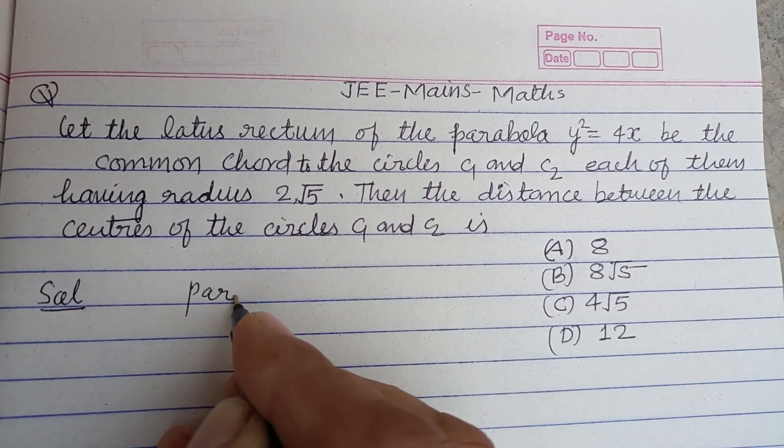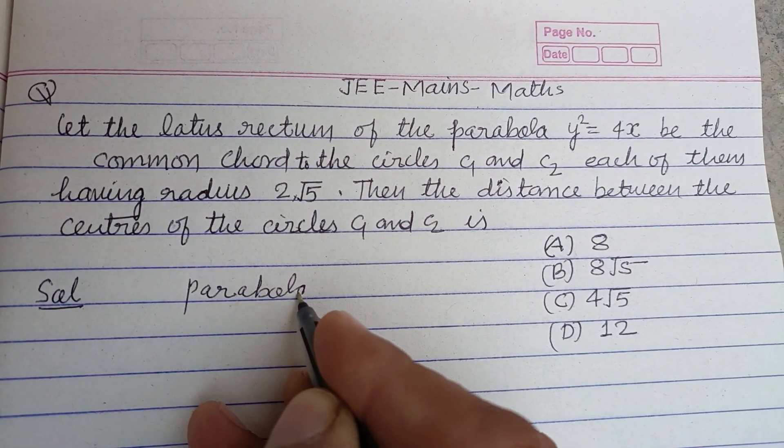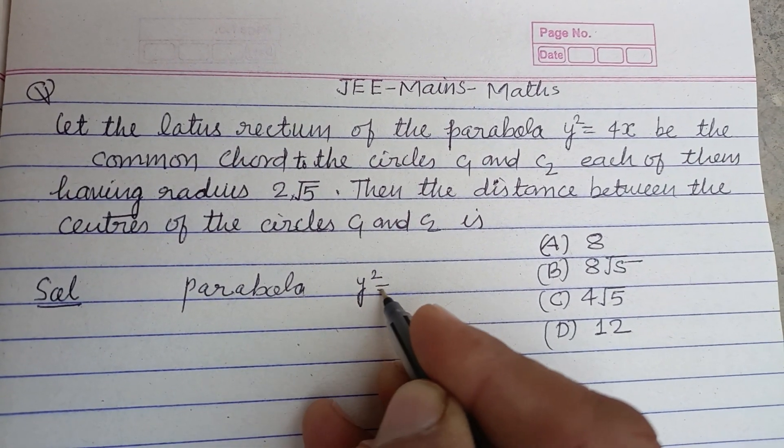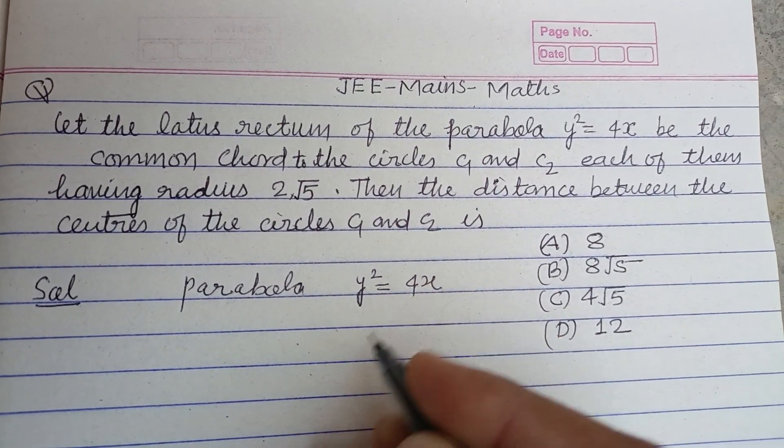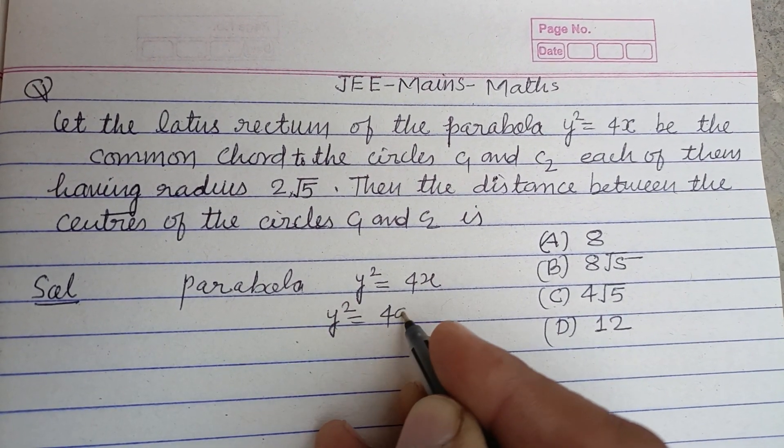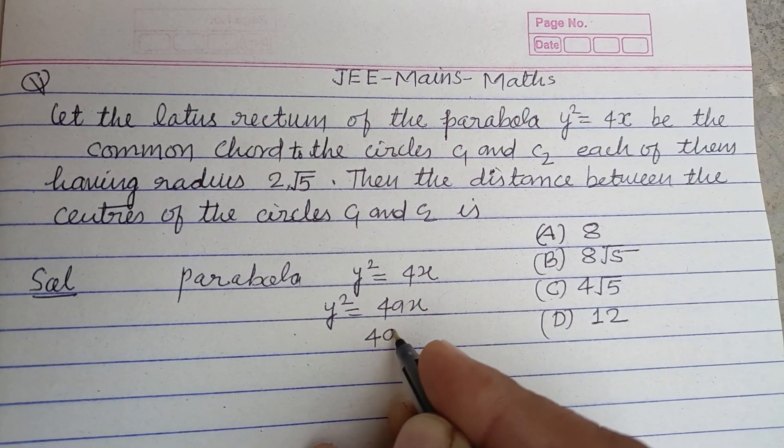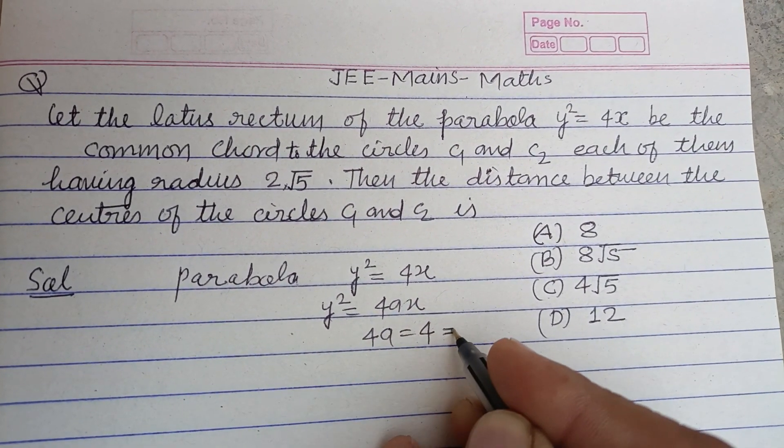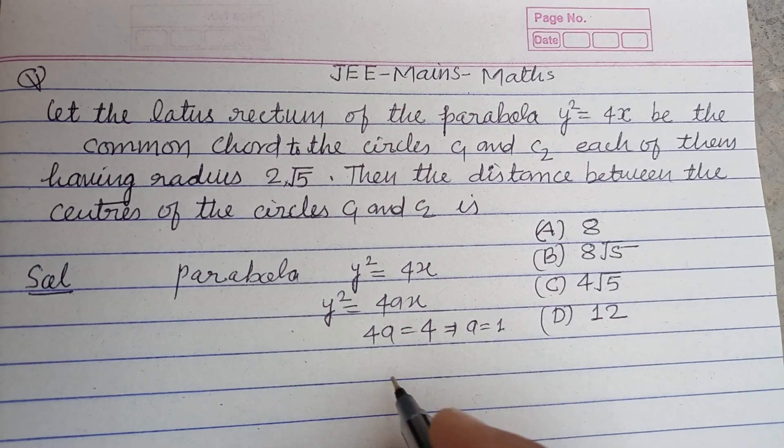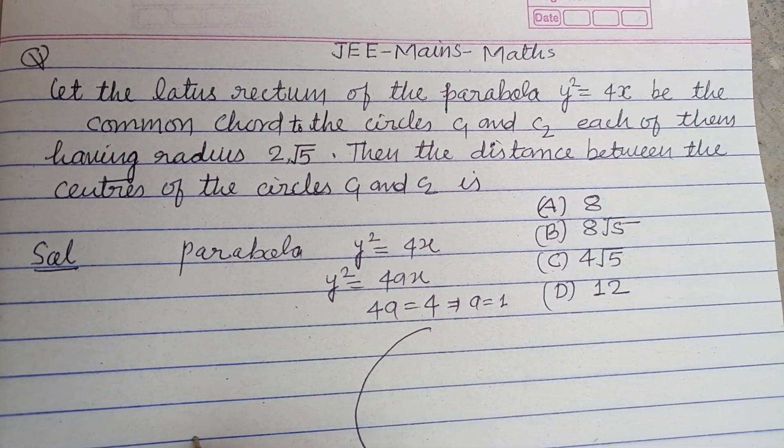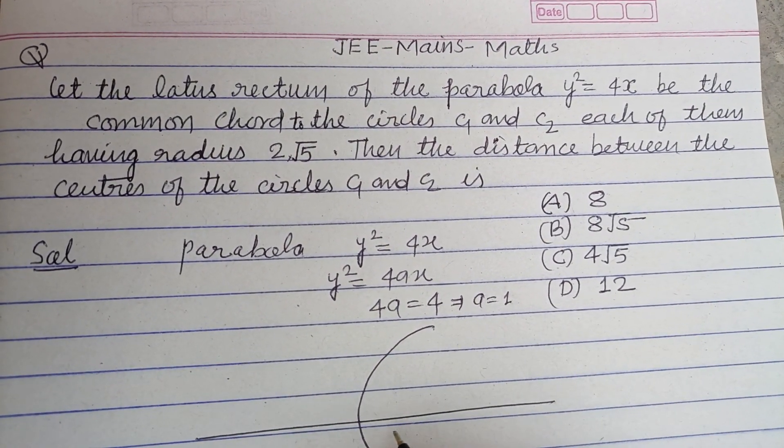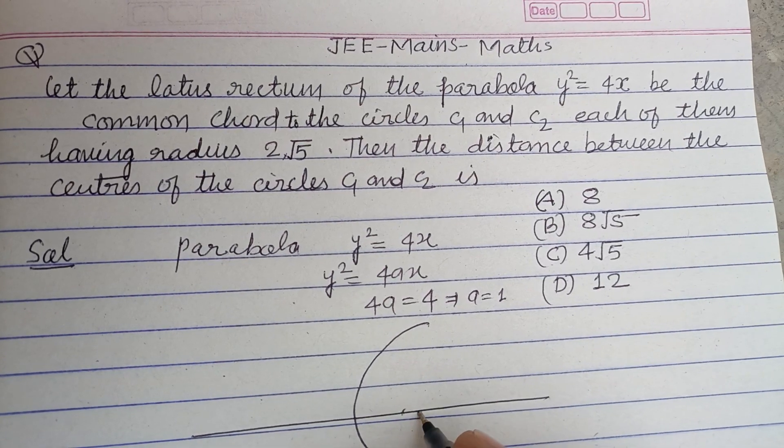So student, here a parabola is given: y² = 4x. Comparing this with y² = 4ax, we get 4a = 4, therefore a = 1. So this is the parabola and its focus is (a, 0), which is (1, 0).